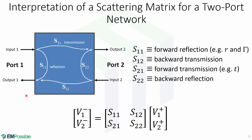Here is an interpretation of a scattering matrix for a two-port network, where we have input 1, input 2, output 1, and output 2. This is port 1 and this is port 2. Therefore, S11 connects input 1 to output 1 and is the forward reflection, which is R and gamma. S12 relates input 2 with output 1, and it's called backward transmission. S21 relates input 1 to output 2 and is forward transmission. S22 relates input 2 to output 2 and it's called backward reflection.